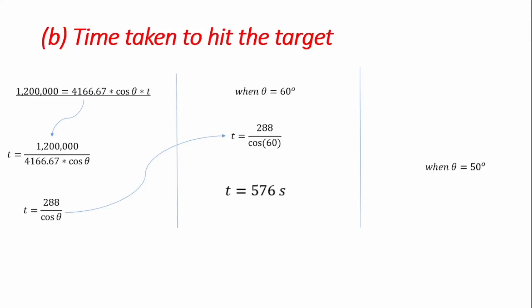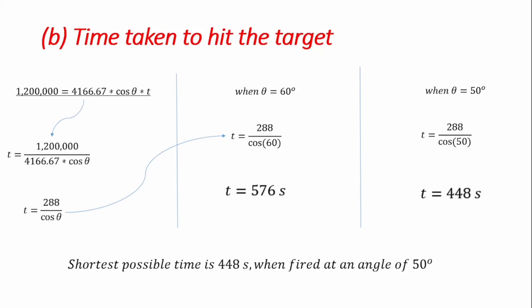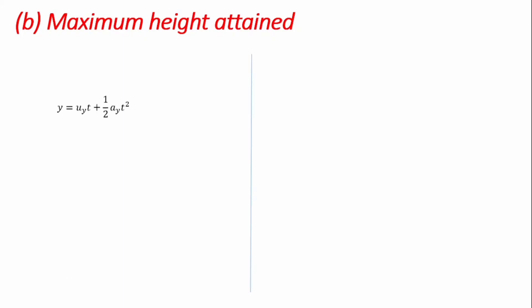For θ = 60°, t = 576 seconds. For θ = 50°, t = 448 seconds. The shortest possible time to hit the target is therefore 448 seconds, achieved when the missile is projected at an angle of 50 degrees.